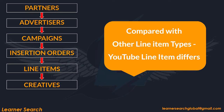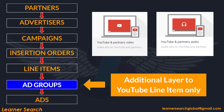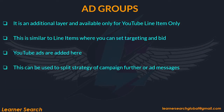When compared with other line item types, YouTube line item differs. A new additional layer called ad groups is added after line item. Ad groups are an additional layer available only for YouTube line items. This is similar to a line item where you set targeting and bid. In ad groups, YouTube ads are added. These ad groups are used to split the strategy of campaigns further and also as per the ad messages.